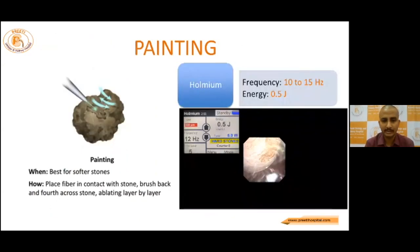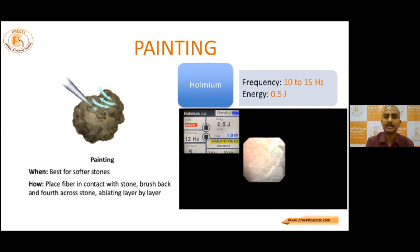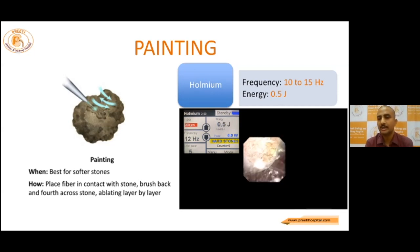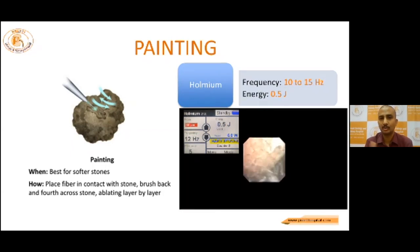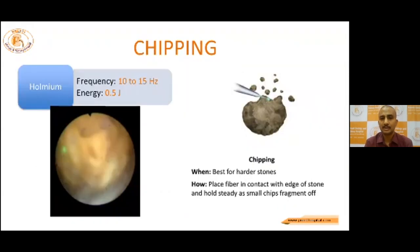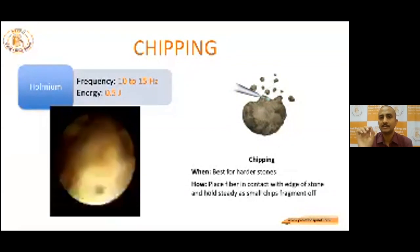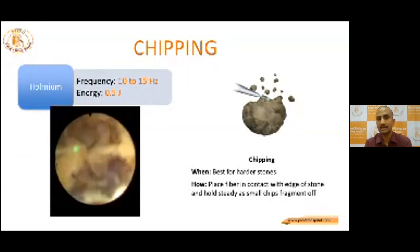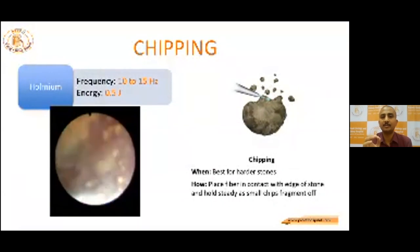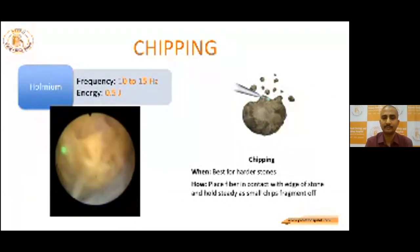We will discuss laser lithotripsy techniques, as each technique has different laser settings. First, the painting technique: best for soft stones, you place the fiber in contact with the stone and brush back and forth, ablating layer by layer. Energy used is around 0.5 joules — the lowest energy in a 30-watt Holmium machine — with a frequency of 10 to 15 Hz. The chipping method is the same as the painting technique but coming from the edges of the stone, fragmenting it piece by piece as small as possible, most commonly for hard stones. Energy is also 0.5 joules and frequency is 10 to 15 Hz.